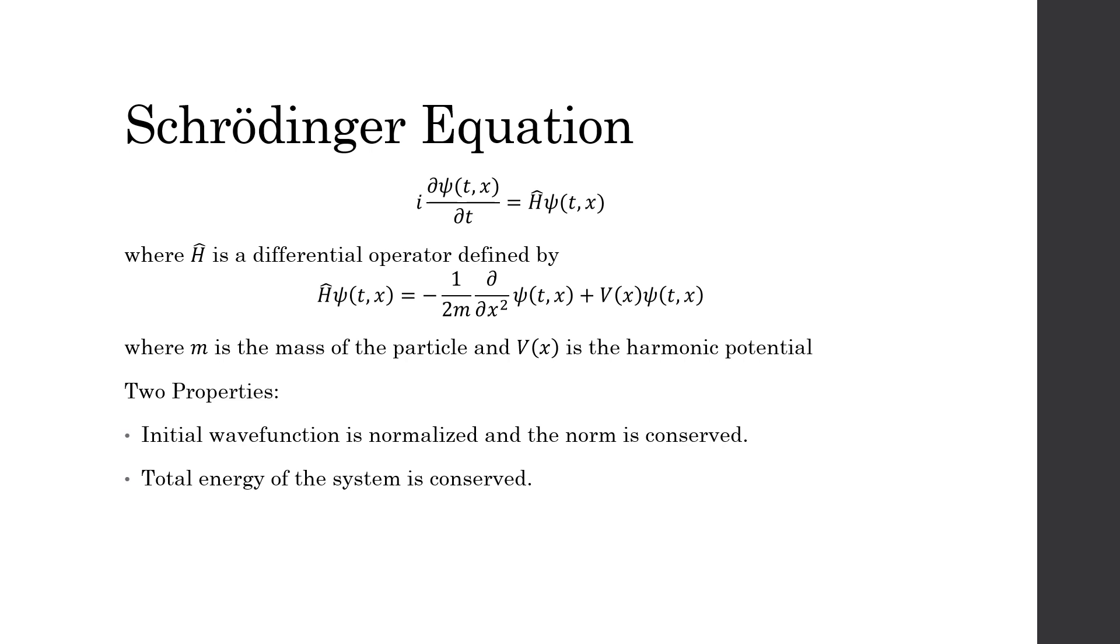The Hamiltonian is a differential operator that when applied to ψ is equal to negative one over two times the mass of the particle times the second partial derivative with respect to x of ψ plus the harmonic potential times ψ.